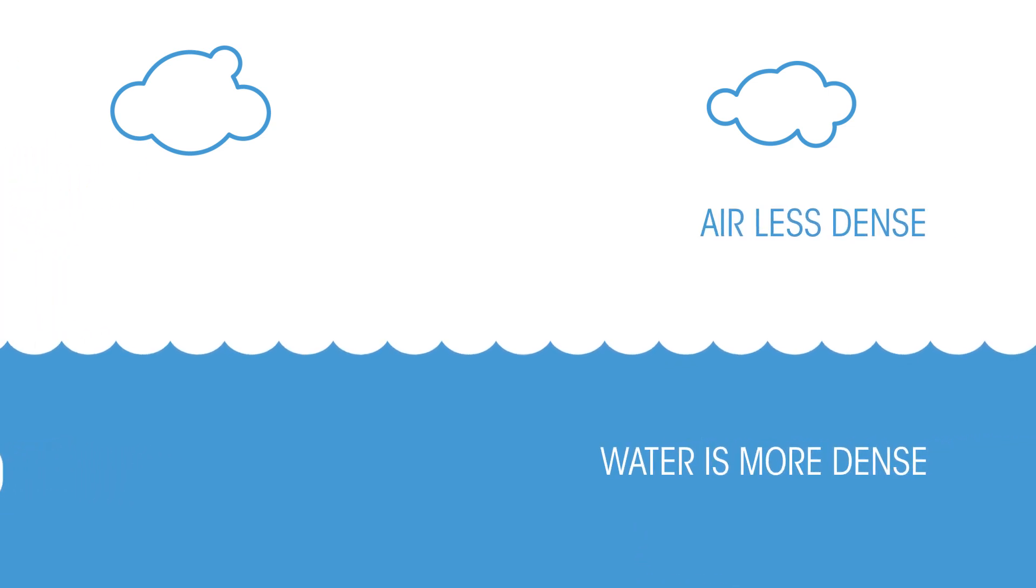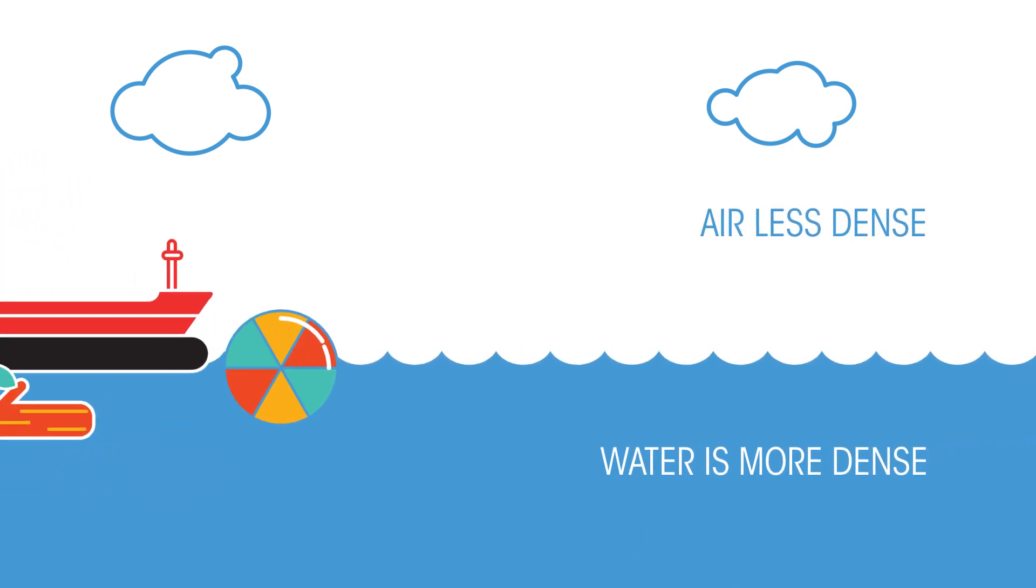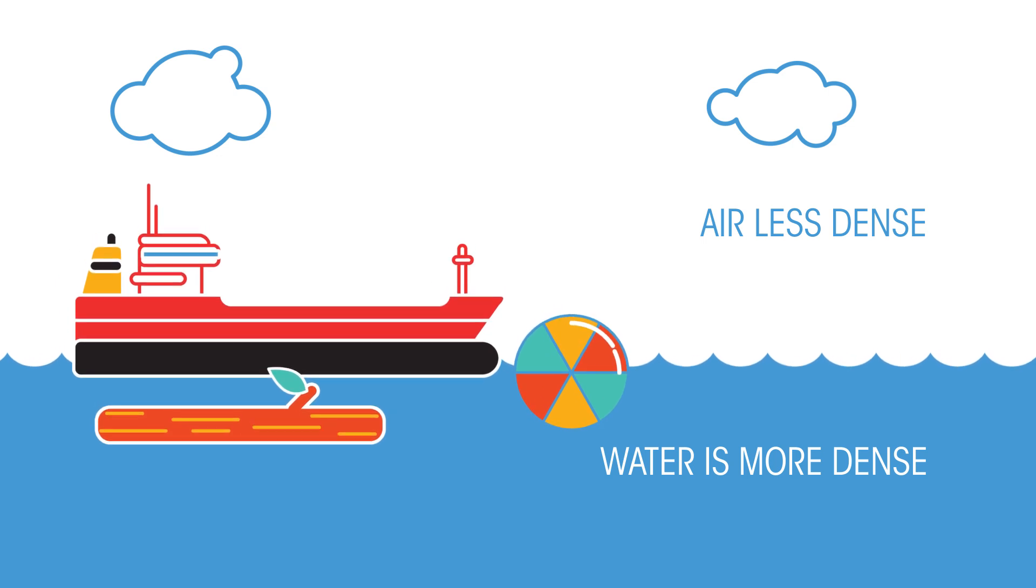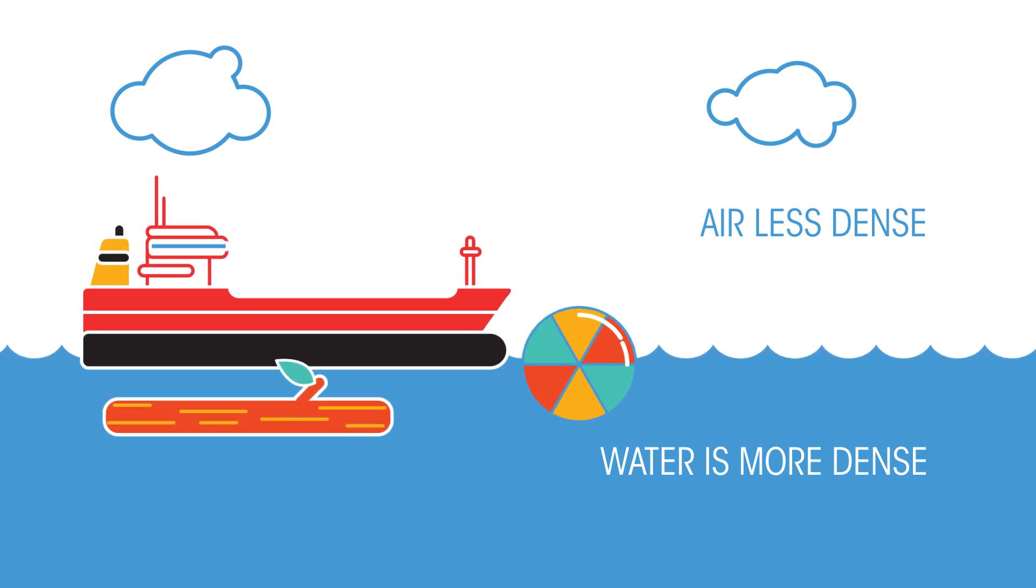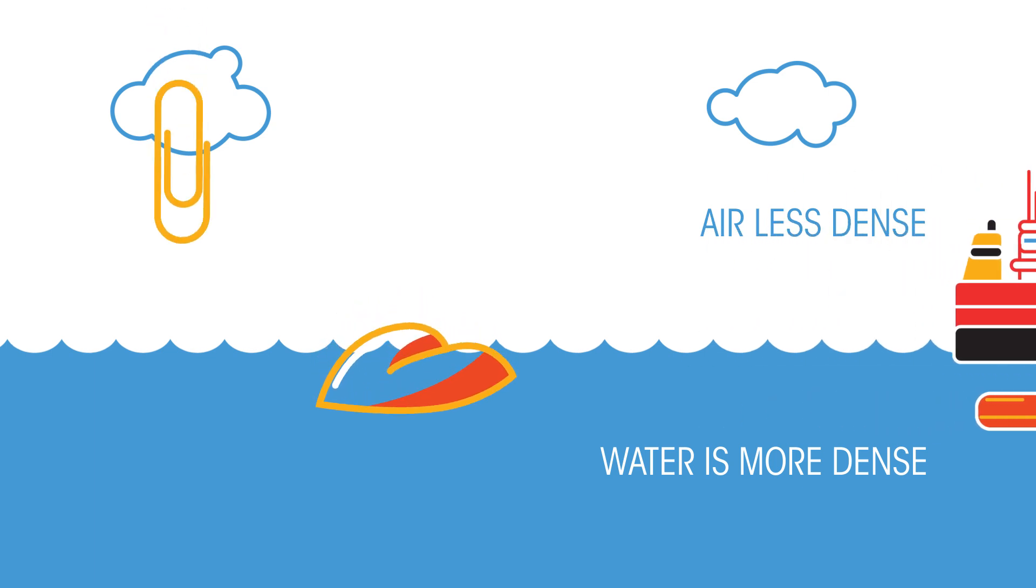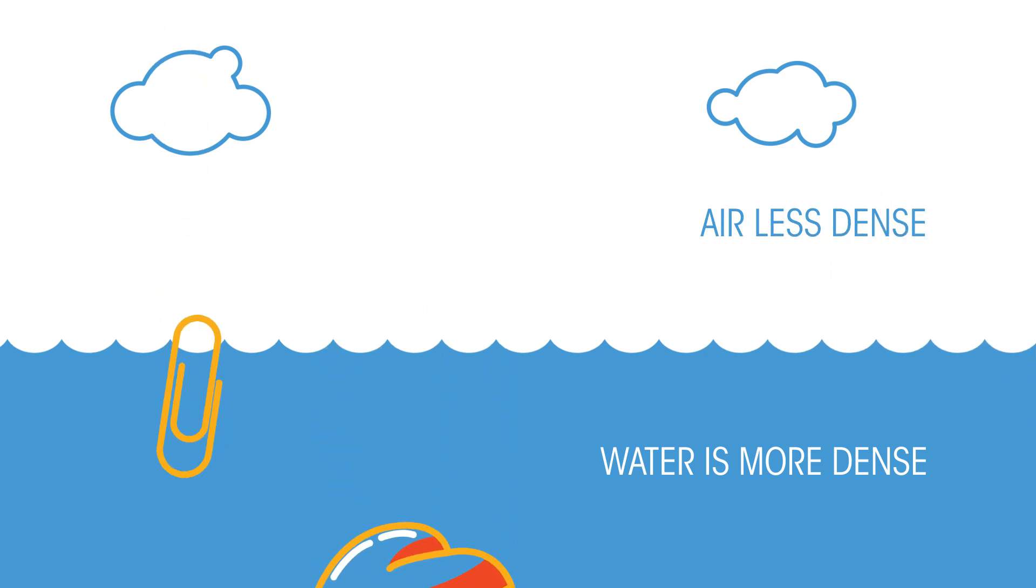Air is less dense than water. The beach ball, boat and wooden log are also less dense than water, hence they float. But the pebble and the paperclip are more dense than water, and so sink.